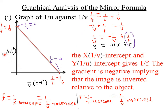Because u is in centimeters, 1/u must be in per centimeters — that is centimeter to the power of negative 1, from the laws of indices. Similarly, because v is in centimeters, 1/v will be in per centimeters, that is the reciprocal of centimeters or centimeters power negative 1, as taught in mathematics.